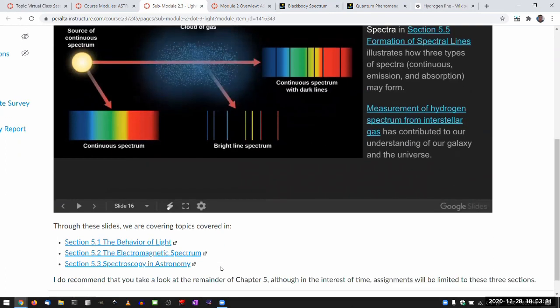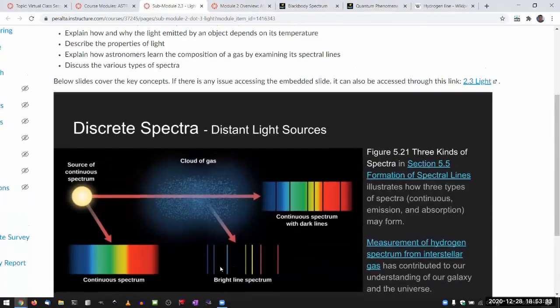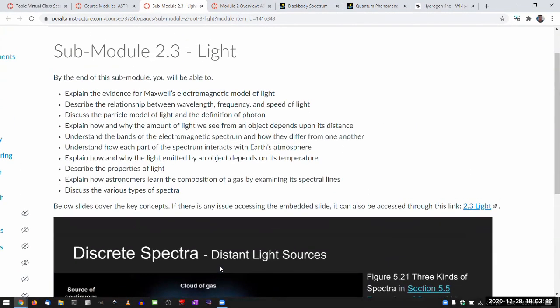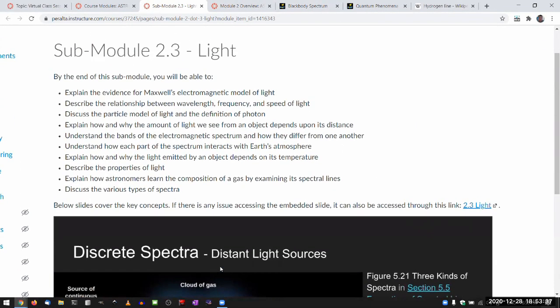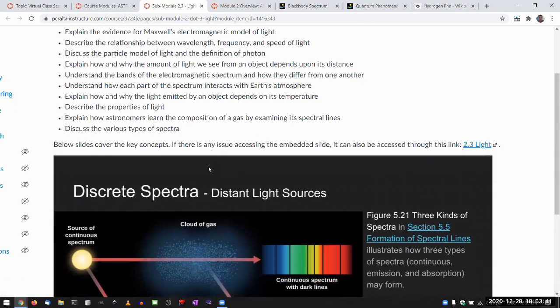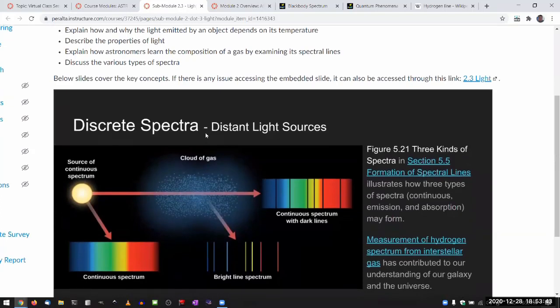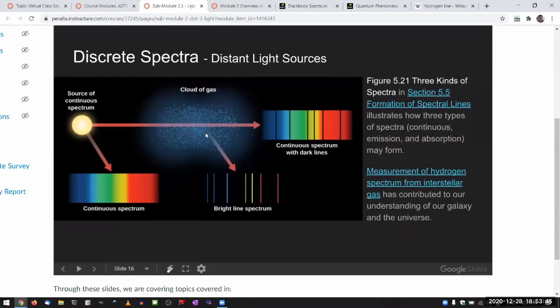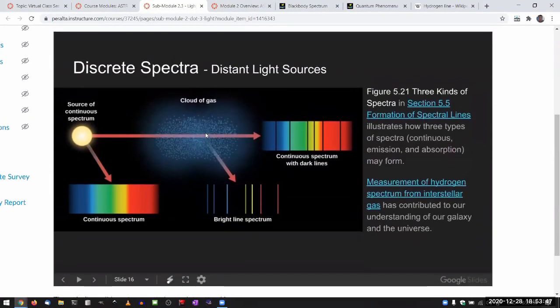What else do I want to talk about light? So sub module 2.3 kind of brings together in one place a lot of different things about light that's useful for astronomy. And I think what I covered in the last 20, 30 minutes or so is overview of that with some additional explanations.